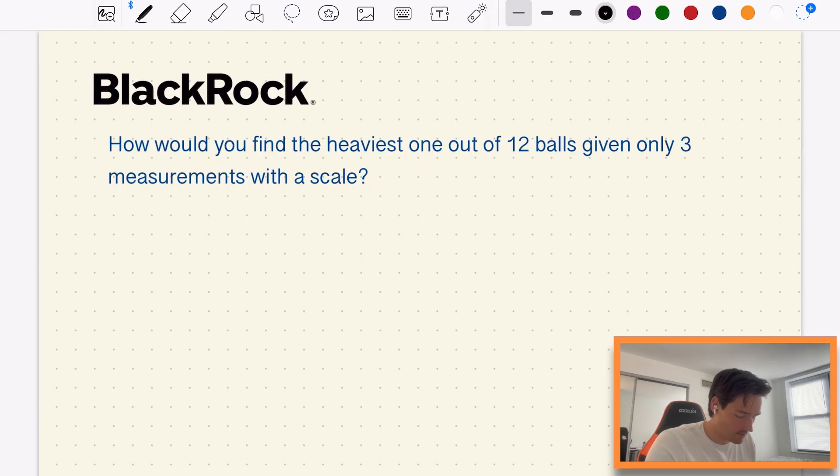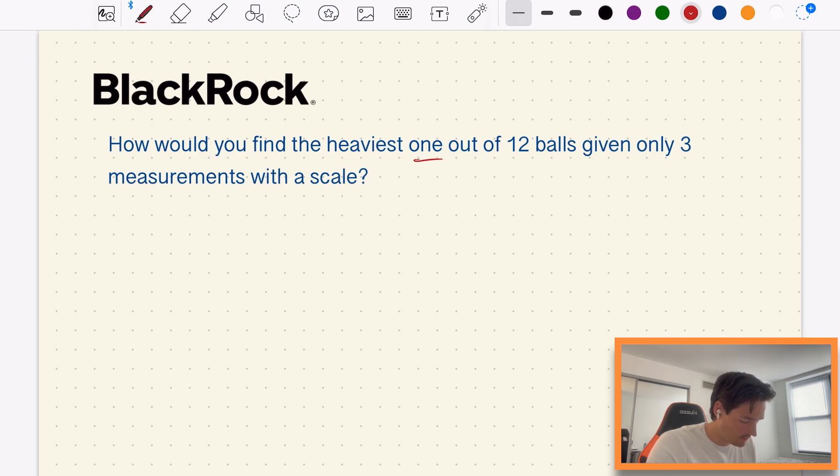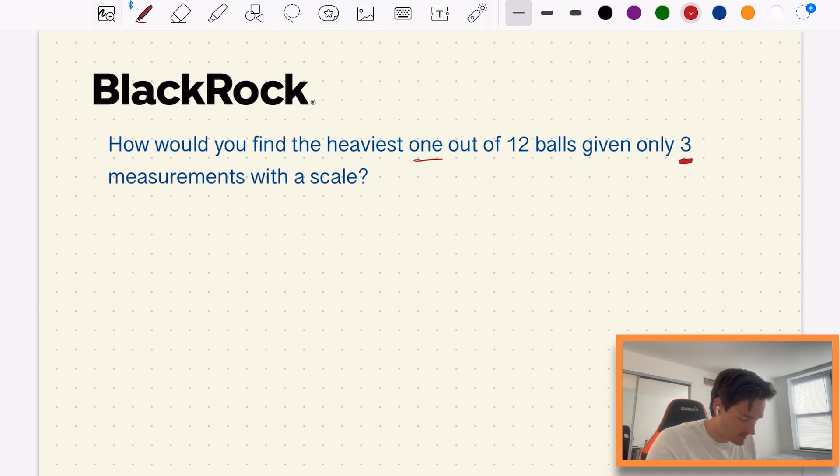So our first question is from BlackRock which is: how would you find the heaviest one out of 12 balls given only three measurements with a scale?